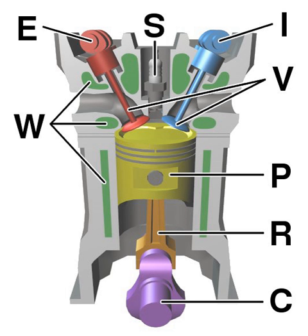A second class of internal combustion engines use continuous combustion: gas turbines, jet engines and most rocket engines, each of which are internal combustion engines on the same principle as previously described.